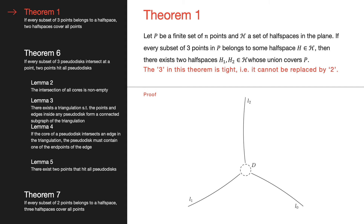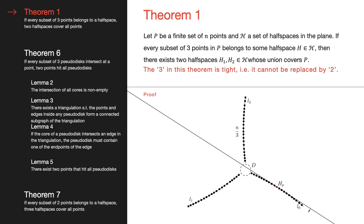To make this proof easier to follow, I will be talking about clockwise and counterclockwise arcs. As an example, L1 is clockwise to L0, while L2 is counterclockwise to L0. To construct our point set with n points, we distribute n over 3 points uniformly along each arc.